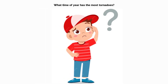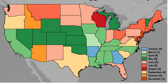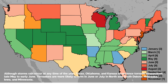Tornadoes are frequently created when the warm and cool air streams collide. Although storms can occur at any time of the year, Texas, Oklahoma, and Kansas experience tornado season from late May to early June. Tornadoes are more likely to form in June or July in North and South Dakota, Nebraska, Iowa, and Minnesota.